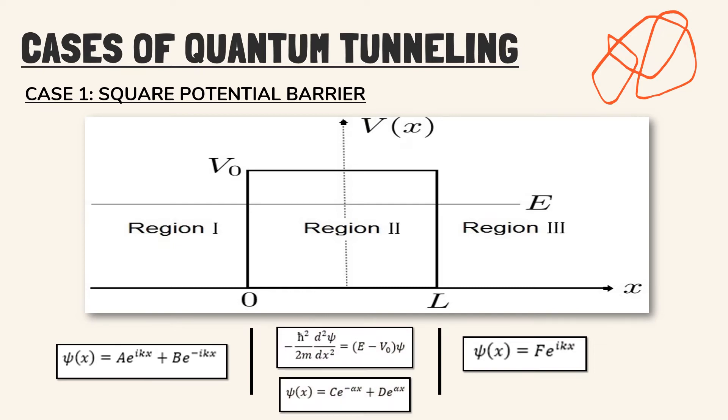For region 2, since the potential energy is at its maximum, the solution of the Schrodinger equation is seen to be as follows.